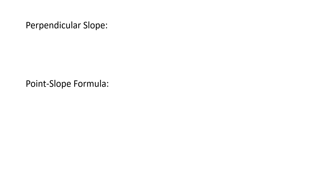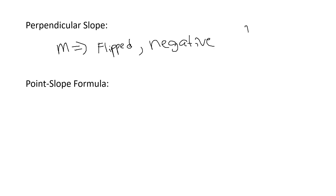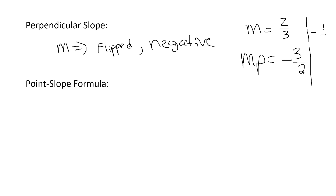A couple of things you have to remember: we talked about perpendicular and parallel slopes not too long ago. Parallel lines — their slopes match. Perpendicular lines — their slopes are the negative reciprocal. So your m is the flipped negative. If I have a slope of two-thirds, the perpendicular slope mp is negative three over two. If I have a slope of negative one-half, the perpendicular slope is positive two over one. Just remember: flip it and change the sign.